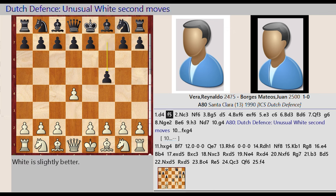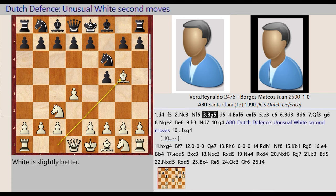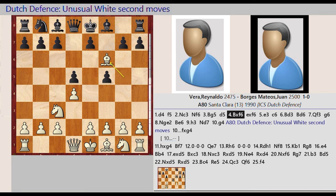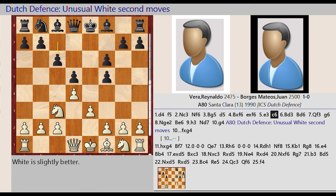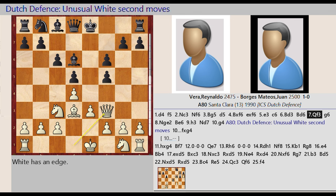F7 F5, Knight B1 C3, Knight G8 F6, Bishop C1 G5, D7 D5, Bishop G5 takes on F6, E7 captures F6, E2 E3, C7 C6, Bishop F1 D3, Bishop F8 D6, Queen D1 F3.